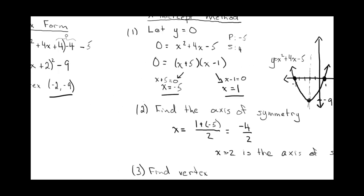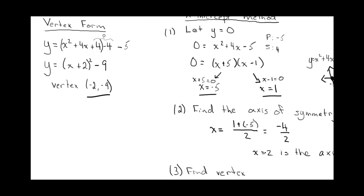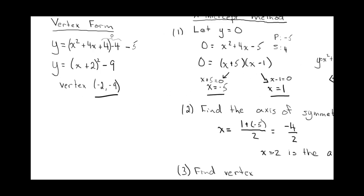You might be saying, why do we have two methods? Well, this example doesn't really illustrate this. But generally, this method will be a little bit quicker. Finding the x-intercepts, the axis of symmetry and the vertex. This one only took me two steps. But remember, completing the square can be a lot harder, right?